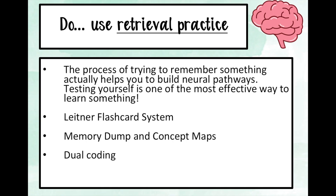Dual coding means finding two different ways to embed the same information — using both text and image. Each will build a separate neural pathway, one for the image and one for the text, and having both makes the learning much stronger and more likely to stick. For example, you could take a text and turn it into a diagram, or take a chart and write a description of it on your flashcards — this will help you embed that information really strongly.